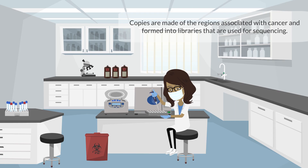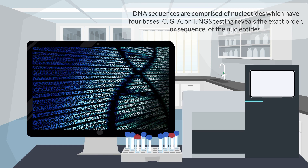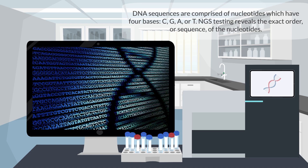Copies are made of the regions associated with cancer and formed into libraries that are used for sequencing. DNA sequences are comprised of nucleotides which have four bases: C, G, A, or T. NGS testing reveals the exact order or sequence of nucleotides.